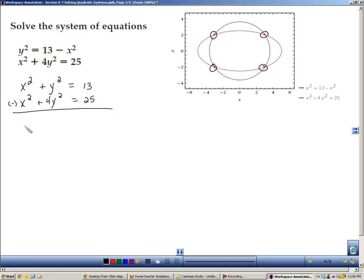If I subtract these two equations, my x's would be eliminated. So I end up with 1 minus 4, which is negative 3y squared, and I end up with 13 minus 25, which is negative 12. Divide both sides by negative 3. So we end up with y squared equals 4. Now when I take the square root of both sides, don't forget you have to include the plus and minus. So we get y equals positive and negative 2.